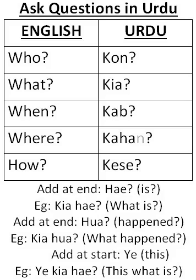You could also try adding 'hua' at the end, which means 'happened'. For example, Kya hua? — What happened? Or Kab hua? — When happened?